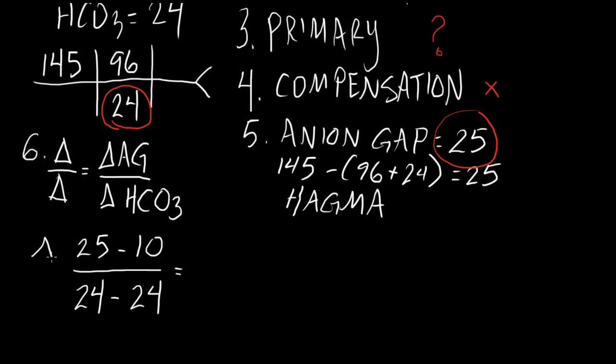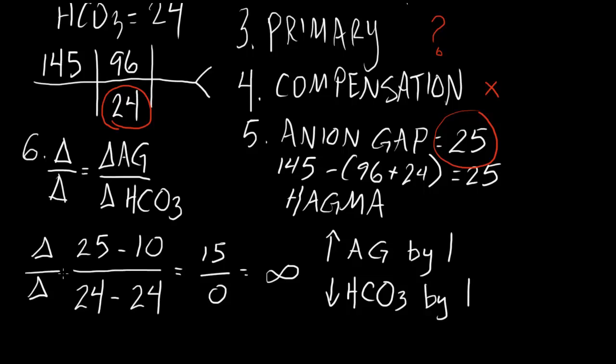If we do our delta-delta, in this particular case, it's 15 over 0, which is infinity. Normally, with an anion gap, a 1 increase in anion gap should have a decrease in bicarb, approximately by 1. And so, we should expect this ratio, this ratio should be normal delta-delta should be between 1 and 2. And this is definitely greater than 2.